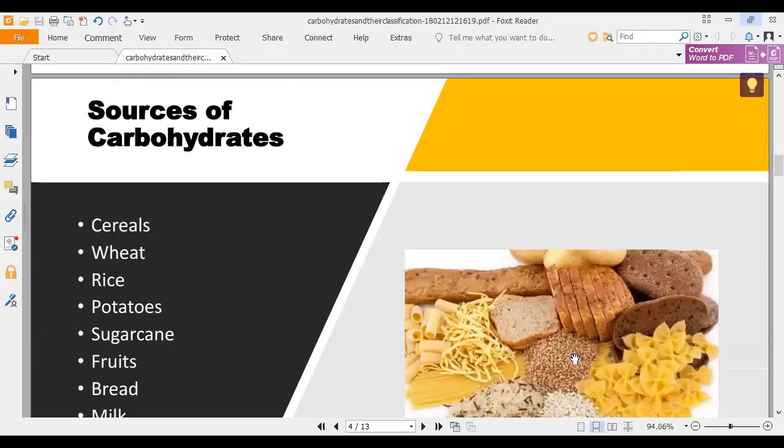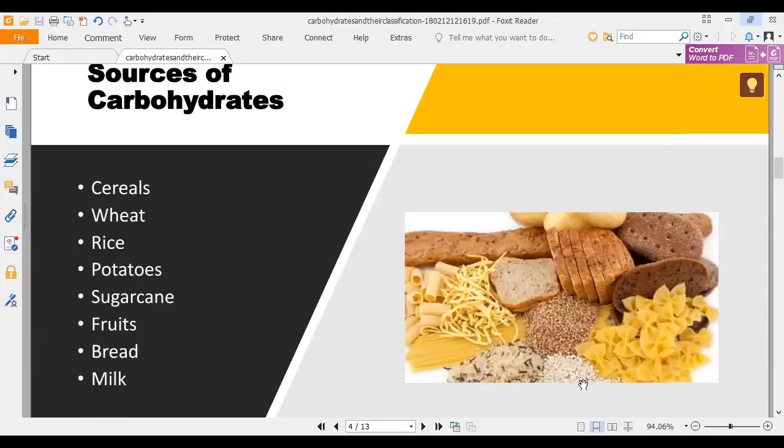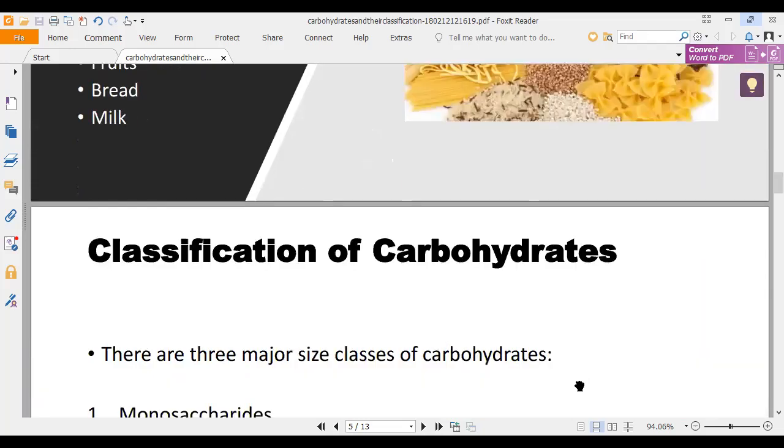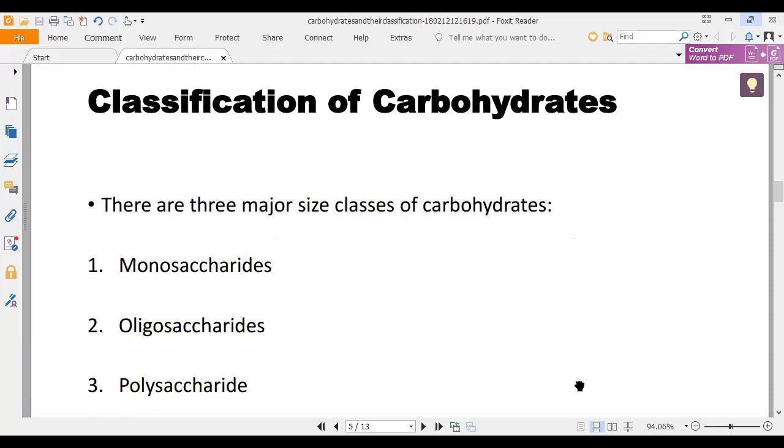The sources of carbohydrates are cereals, wheat, rice, potatoes, sugar, fruits, bread, and milk. There are three major types of carbohydrates: monosaccharides, oligosaccharides and polysaccharides.